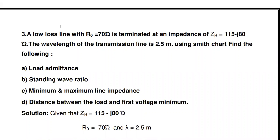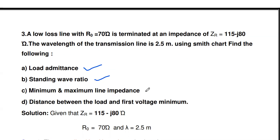Welcome to my channel. Today we are going to discuss a Smith chart problem from the subject of transmission lines in RF systems and transmission lines and waveguides. We already solved two problems using the Smith chart — in those we calculated the reflection coefficient and VSWR value. Now in this problem we are going to solve different parameters: load admittance, standing wave ratio, minimum and maximum line impedance, and the distance between the load and first voltage minimum.